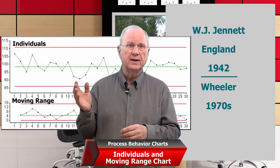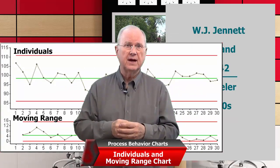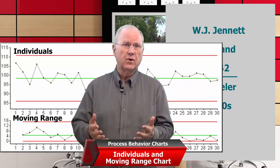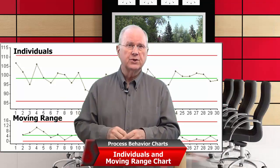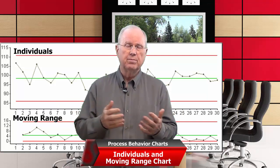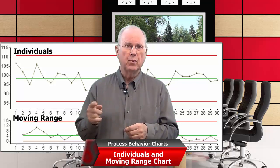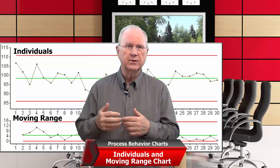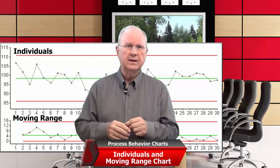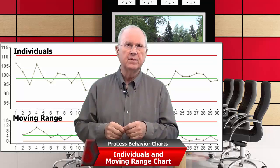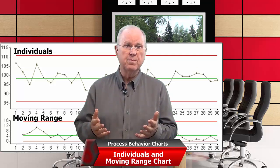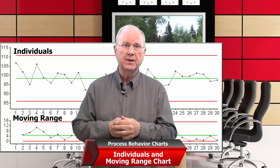The top chart is the data — that could be accounts receivable days outstanding, or the value of inventory each month, or a dimension on a part that we're manufacturing. The lower chart is just the difference between successive upper chart values, disregarding sign. So point number two is the difference between points one and two; point three is the difference between points two and three, again disregarding sign. Both have a center line — for the upper chart that's the mean of the data, and for the lower chart it's the mean of the moving ranges. You can also use medians, that's perfectly okay, but the common use is means.